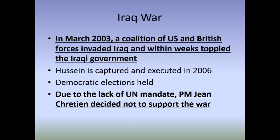Despite not having UN approval, in March of 2003 a coalition of US and British forces invaded Iraq, and within weeks toppled the Iraqi government. In 2006, Saddam Hussein was captured and executed, and democratic elections were held. However, due to the lack of a UN mandate, Prime Minister Jean Chrétien decided not to support the war - Canadian troops were not involved in this Iraq War. Here we see that despite the US and Canada being major allies, Canada still maintained its independent foreign policy role. The Prime Minister decided there wasn't enough evidence to risk Canadian lives, showing that Canada is still able to make up its own mind.